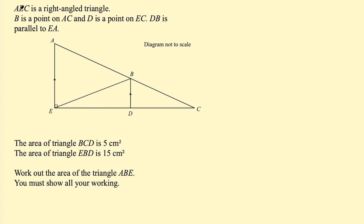This one says: AEC is a right angle triangle. B is a point on AC and D is a point on EC. DB is parallel to EA. The area of triangle BCD is 5 cm². The area of triangle EBD is 15 cm². Work out the area of triangle ABE. You must show all your working.